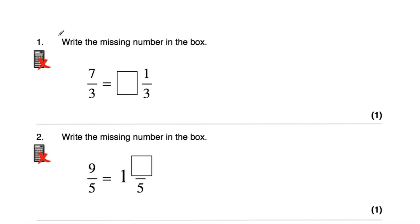Let's have a look at our first question. The first question says: write the missing number in the box. We've got 7 thirds equals blank and 1 third. So we've got our top-heavy fraction with the numerator bigger than the denominator, and we've got our mixed number where we've got our whole number and then the fraction. We want to figure out what the whole number is. So we've got 7 thirds. If you have 3 thirds, that's a whole. Another 3 thirds is another whole. That's 6 thirds altogether, and then you've got one more left over — so that's two wholes and one third left over.